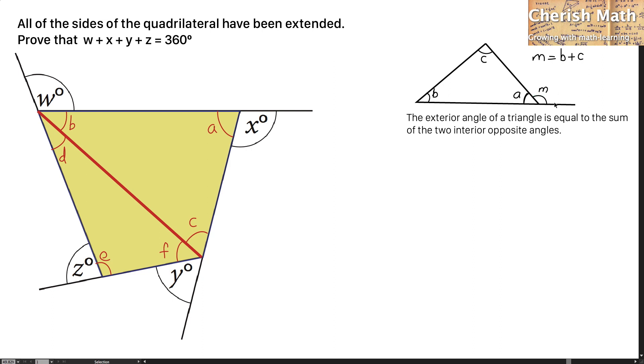That means M stands for the exterior angle, and that is equivalent to the sum of B plus C. B and C are opposite the angle A.